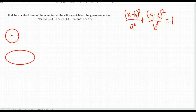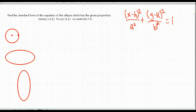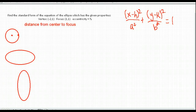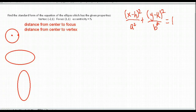The longer or taller your ellipse gets, the more eccentricity you have. The eccentricity is the distance from the center to the focus point divided by the distance from the center to a vertex on your major axis. That is how we find the eccentricity.